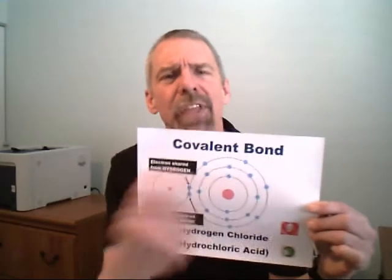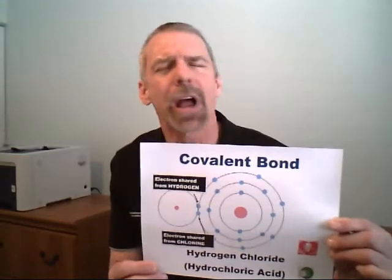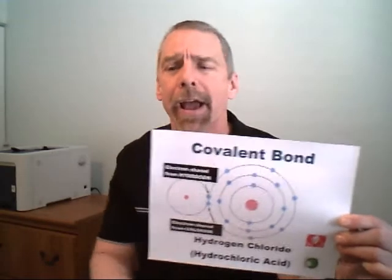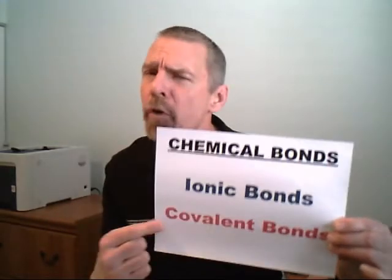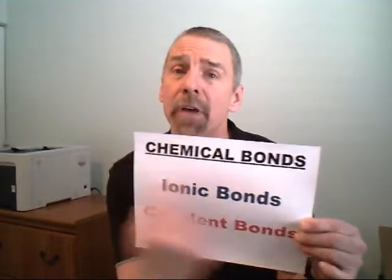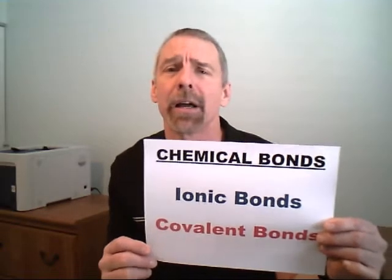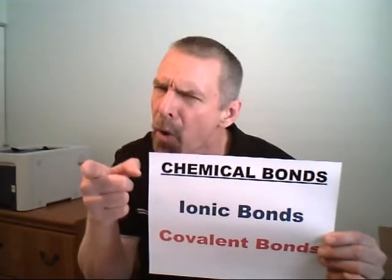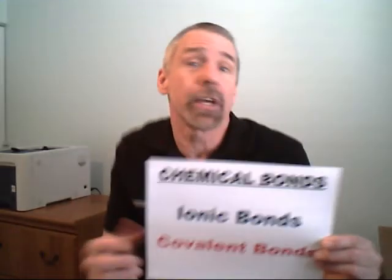Instead they share valence electrons. Ionic bonds, covalent bonds, both of them chemical bonds. How are they made? What's the difference?